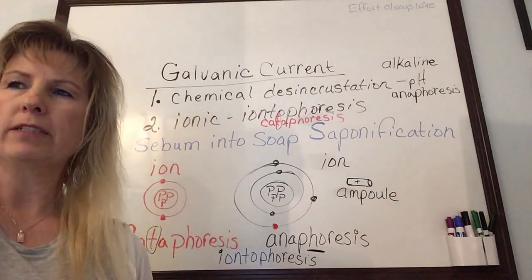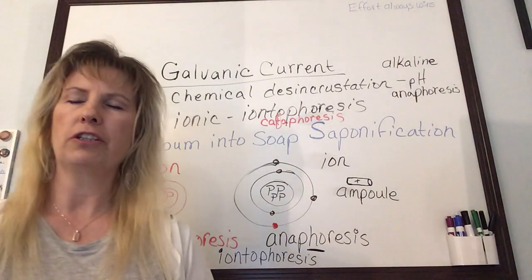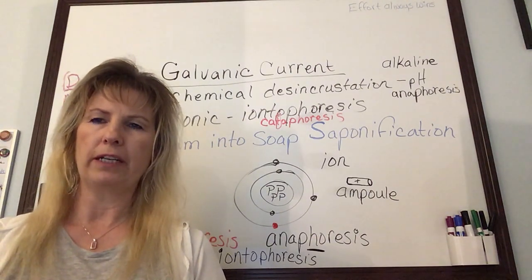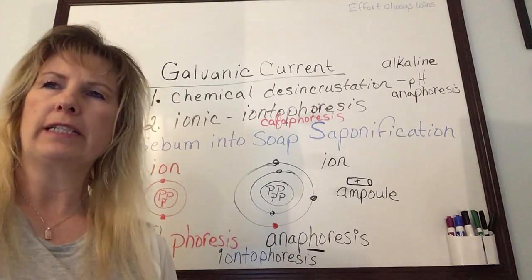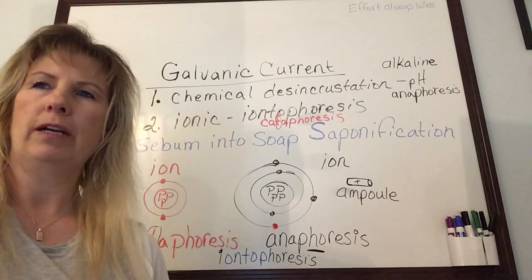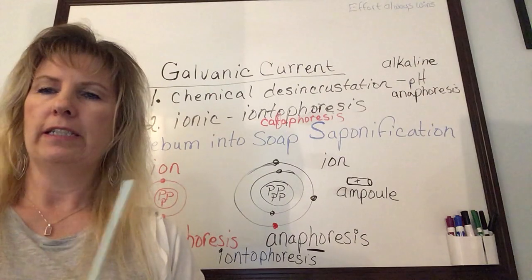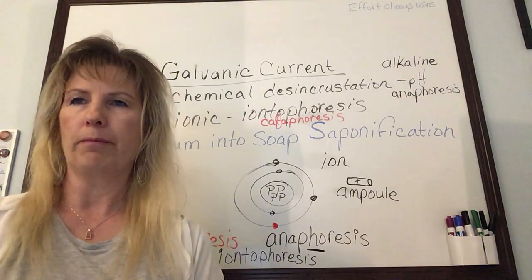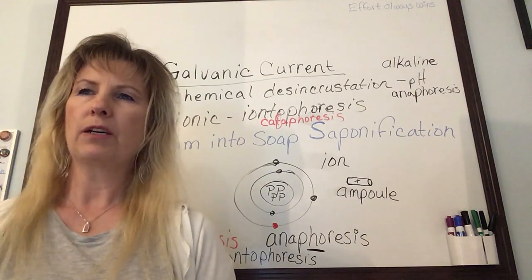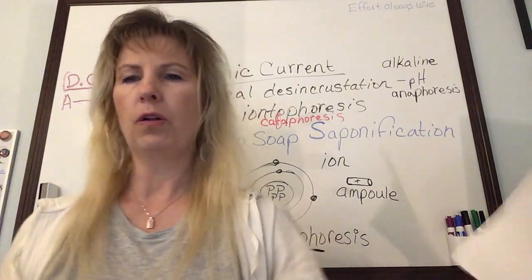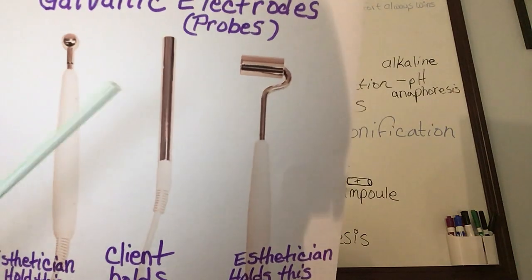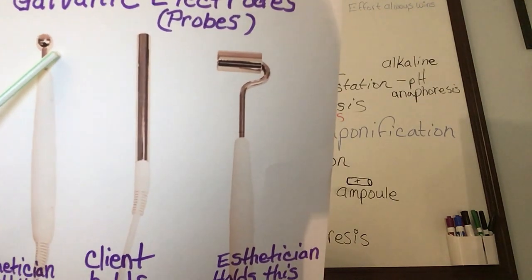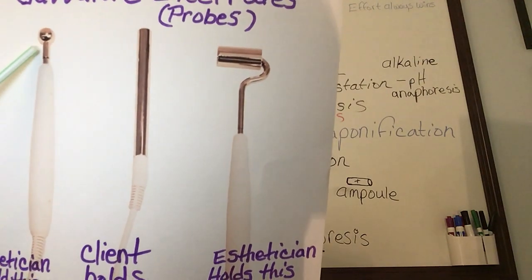Desincrustation uses galvanic current to create a chemical reaction in the skin that emulsifies sebum and debris in the follicles. When performing desincrustation, you apply a negative pH (electronegative) solution on the skin — formulated to remain on the skin rather than be absorbed. The client holds a positive electrode; the esthetician holds the negative electrode set on negative polarity.